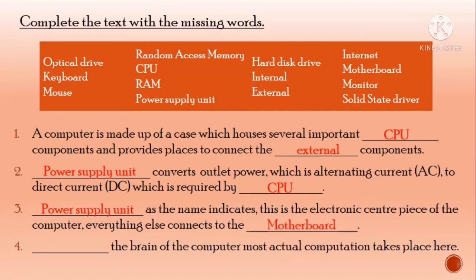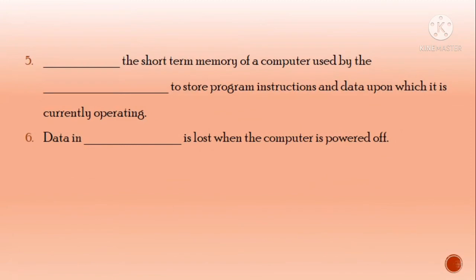Number four, dash, the brain of the computer where most actual computation takes place. We call this the CPU. Number five, the short-term memory of a computer used by the dash to store program instructions and data upon which it is currently operating. What is the short-term memory? We call it RAM. Its full form is Random Access Memory. Number six, data in dash is lost when the computer is powered off. When the data is deleted, where is the data? The data is in the RAM or main memory. Number seven on page number 14 is skipped.